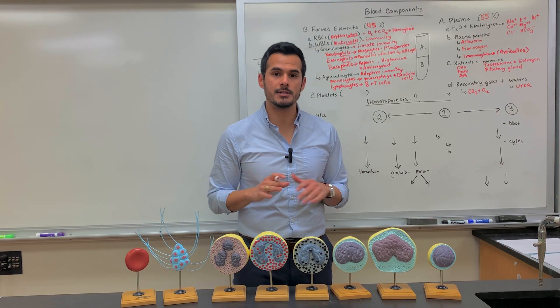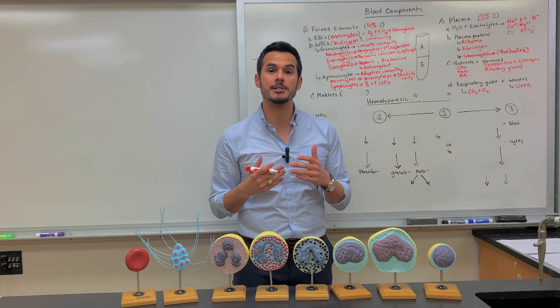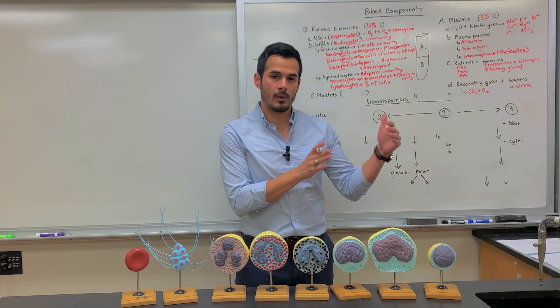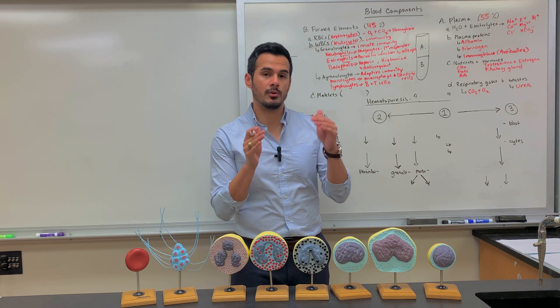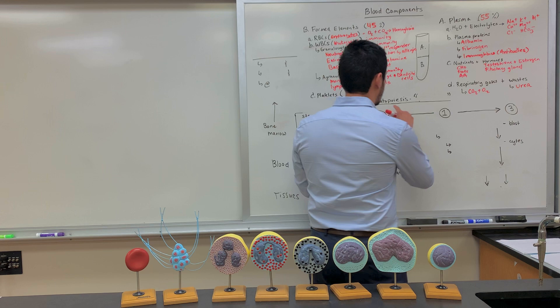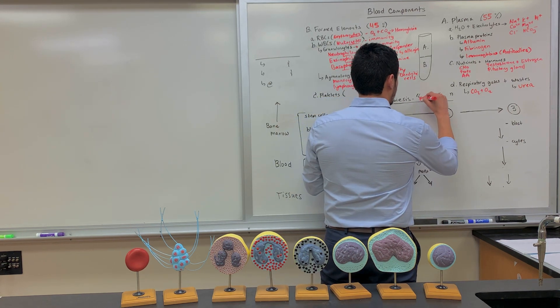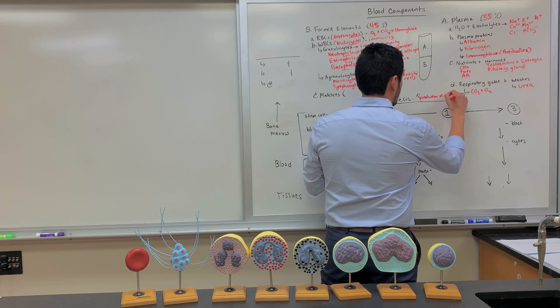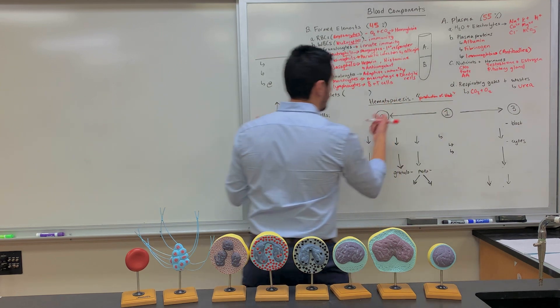Okay, so now that we have a good understanding of some of the different components of the blood and some of the functions of the different white blood cells, now we're going to get into hematopoiesis. And when we break that word down, poiesis is referring to production. So we're referring to the production of blood, referring hemato.